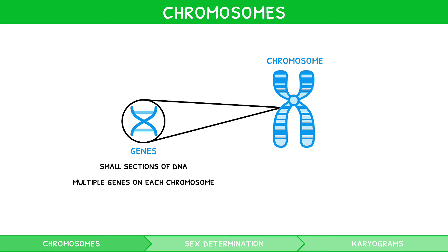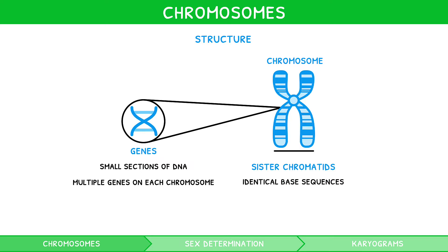Looking at the larger structure of a chromosome, they are divided into two contributing arms, known as sister chromatids. Each sister chromatid has an identical base sequence to the other, i.e. they are clones. The two sister chromatids are attached to one another via a centromere.